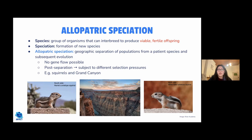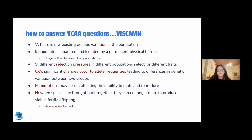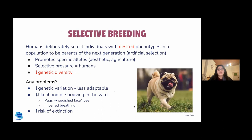In the squirrel example, the Grand Canyon acts as a geographic barrier separating two squirrel populations. Because the populations are separated, no gene flow occurs between them. Living in different environments, they are subject to different selection pressures. Over time they evolve until they can no longer interbreed to form viable fertile offspring, becoming separate species. A similar acronym to VESTIGE can be used to answer allopatric speciation questions.